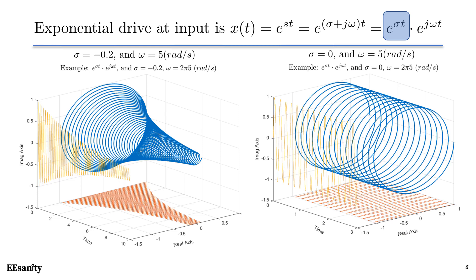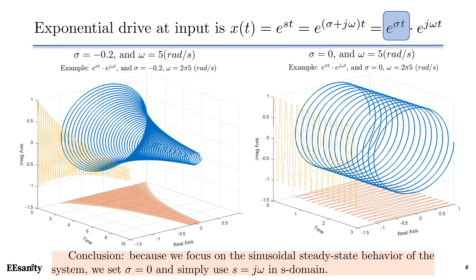This is a pure AC waveform, and it's easy for frequency analysis. So, as a conclusion, we focus on the sinusoidal steady state behavior of the system, so that we can set sigma as zero, and simply use S equals to j omega in S domain analysis.